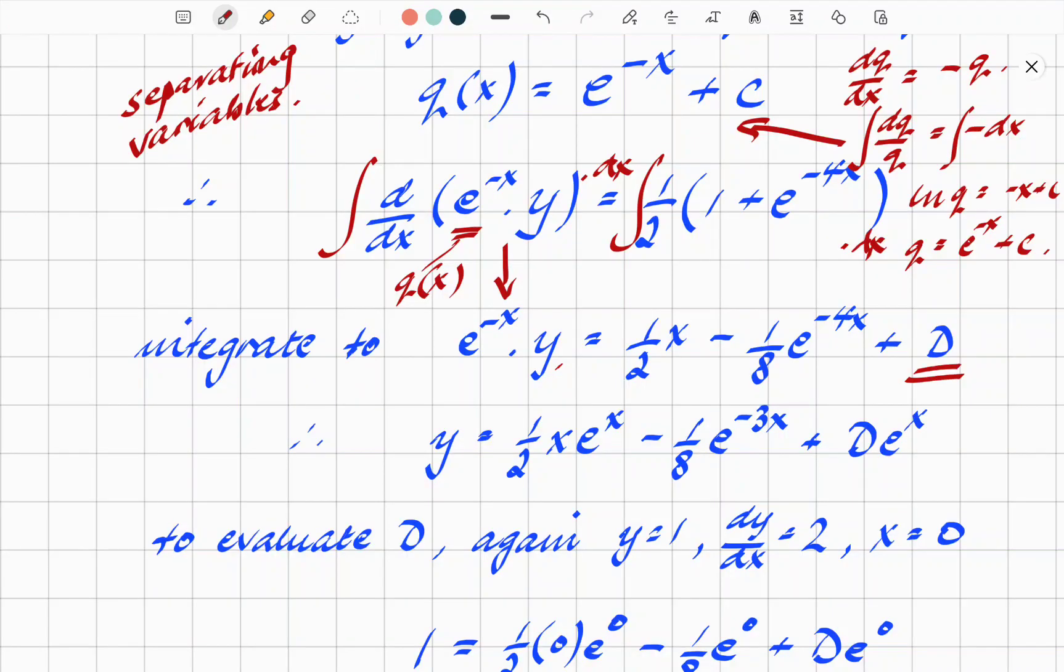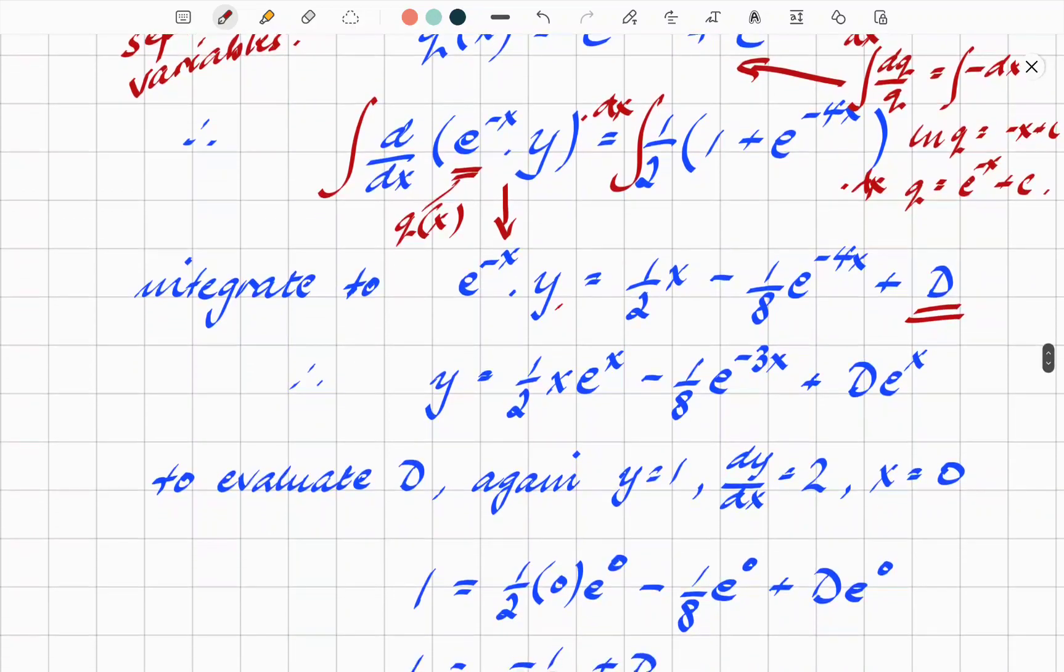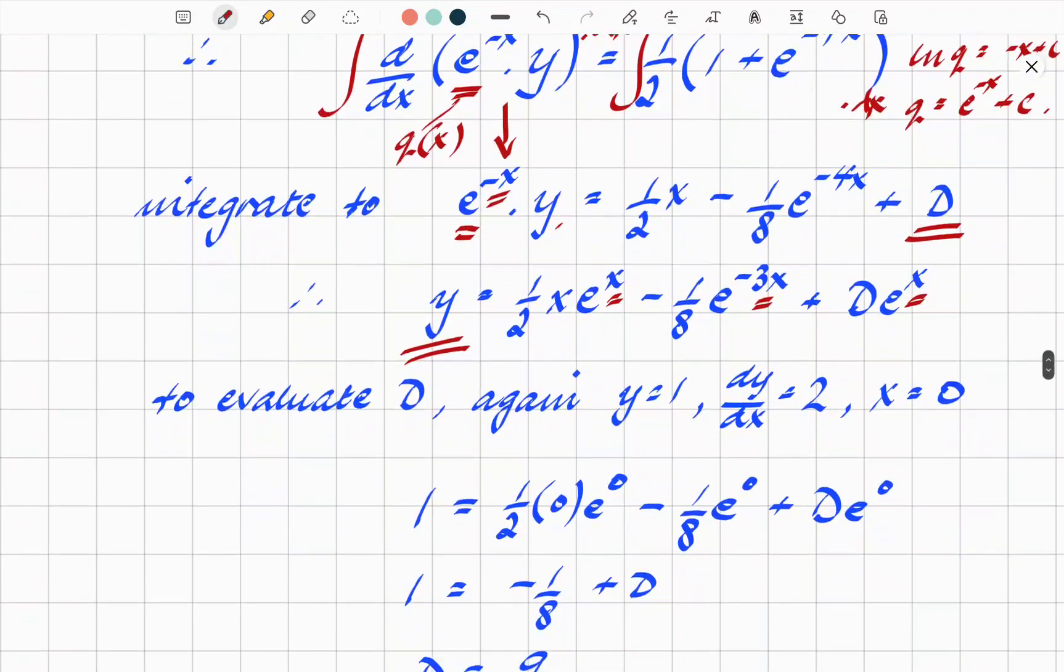Given what we have here, divide everything by e^(-x) and we have an expression for y. This is ultimately what we were looking for originally. y = (1/2)xe^x - (1/8)e^(-3x) + De^x. Remember we're dividing by e^(-x). It's a minus x, that's why when you divide on the other side you're getting plus x. The -4x is actually increased by 1 to -3x, and so on.